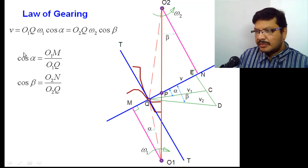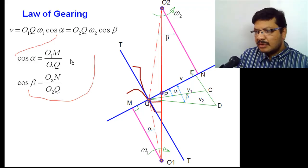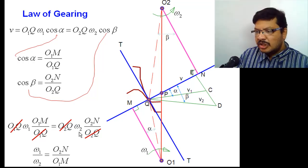Cos alpha and cos beta values are known to you. You substitute these values in this equation. Then, O1Q and O1Q gets cancelled. O2Q and O2Q gets cancelled. Now, velocity ratio omega 1 by omega 2 equal to O2N by O1M. This O2N by O1M value has to be found.